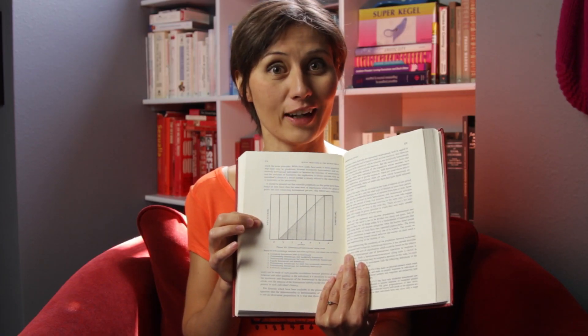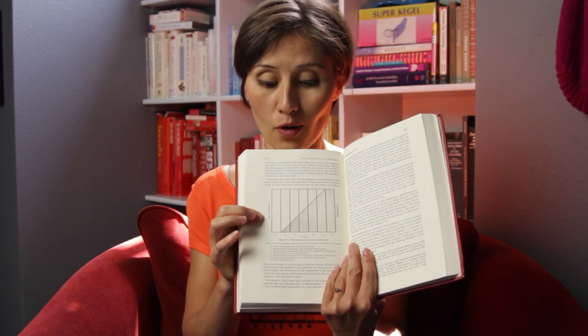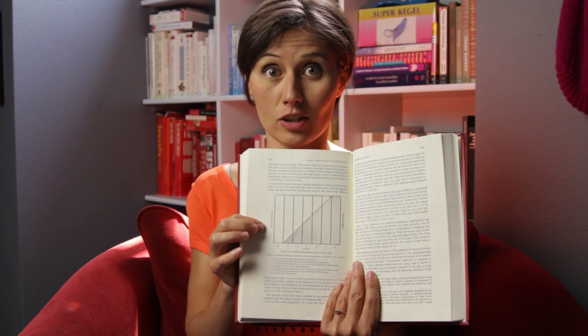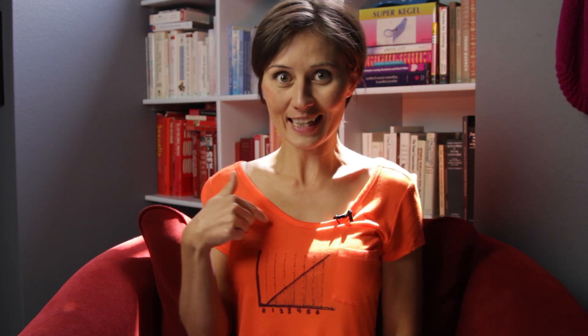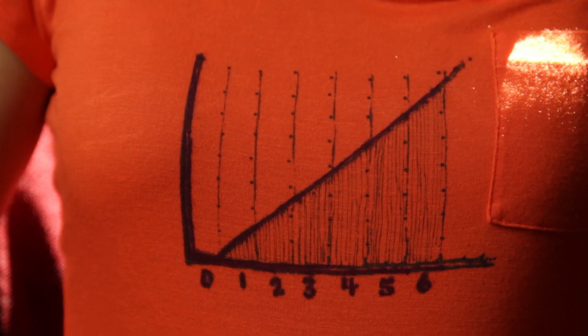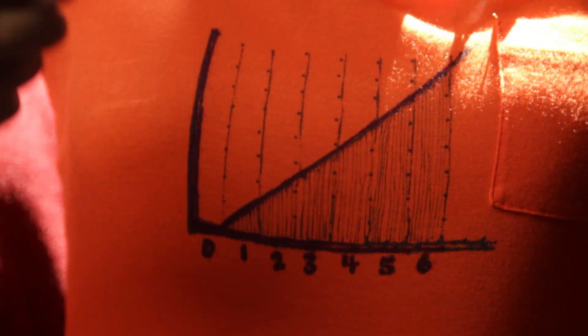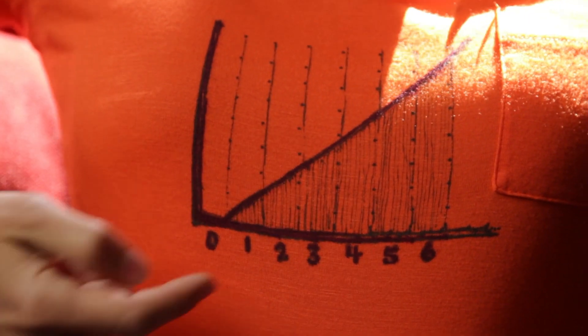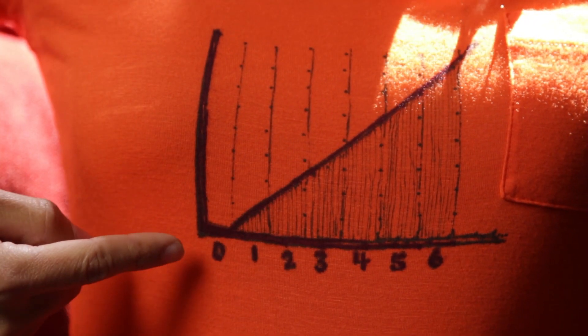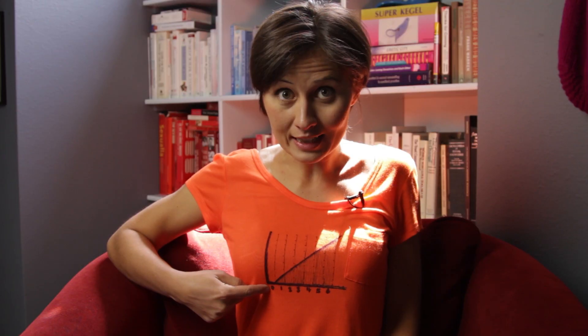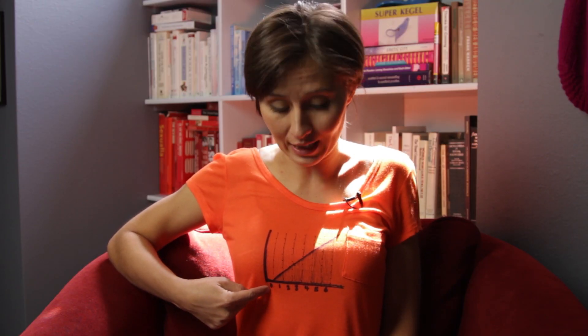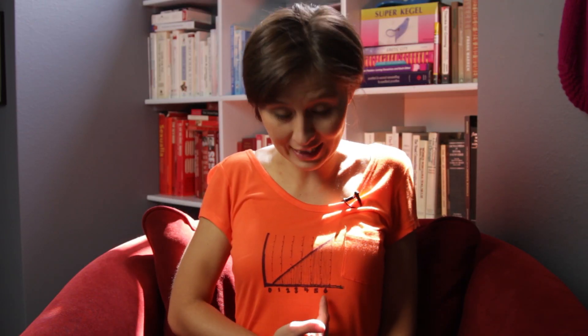Kinsey created a seven-point Likert scale to show how we describe sexual orientation, like this one here. The scale has seven points, zero through six. A Kinsey zero is someone who is exclusively heterosexual, and a Kinsey six is someone who is exclusively homosexual.